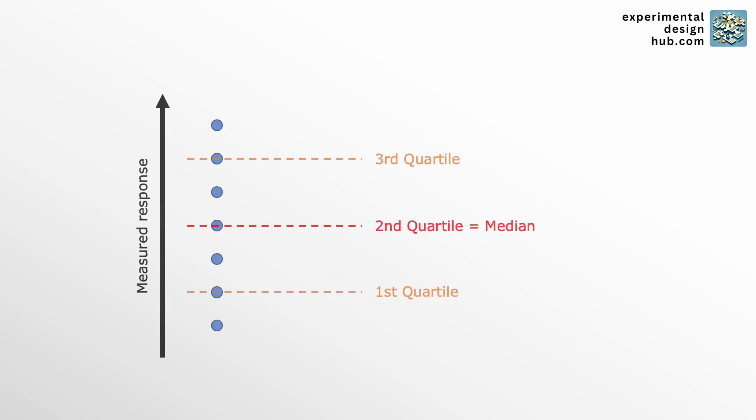Then you've also got quartiles which break your data into four parts and percentiles which break them into 100 parts. And all of those are quantiles.